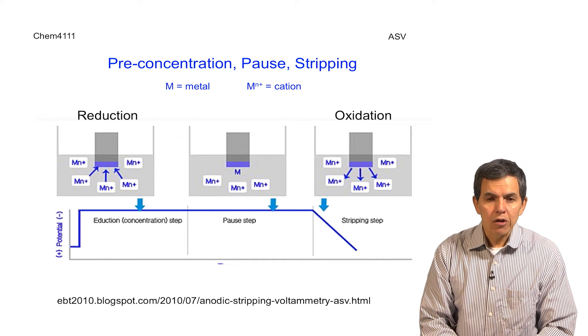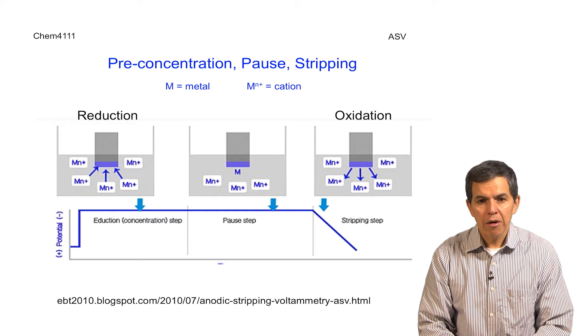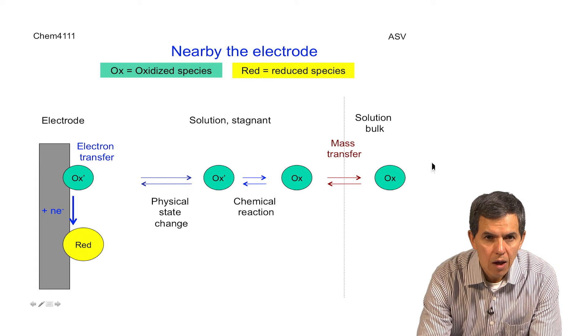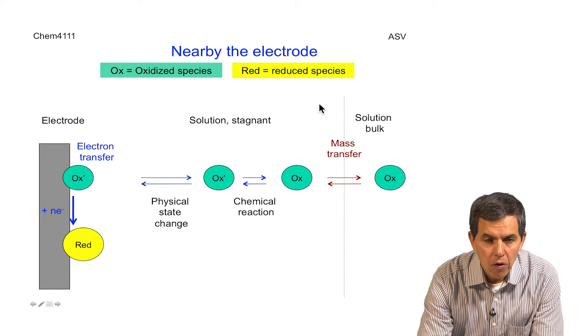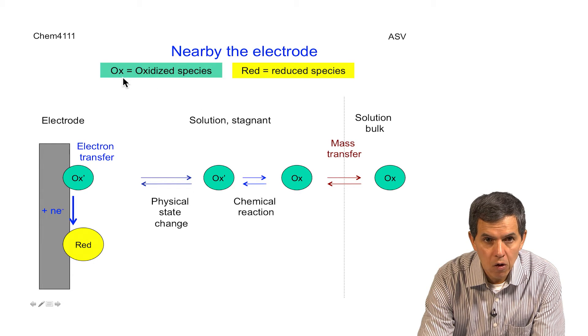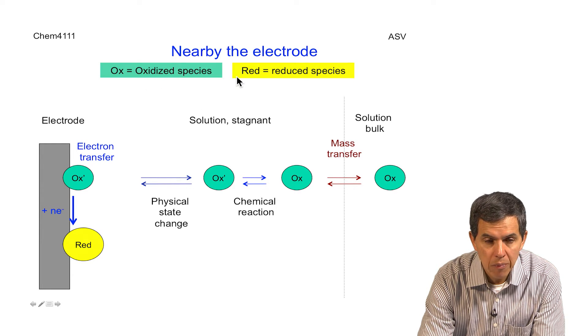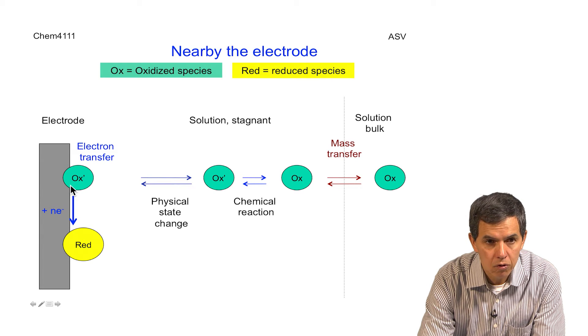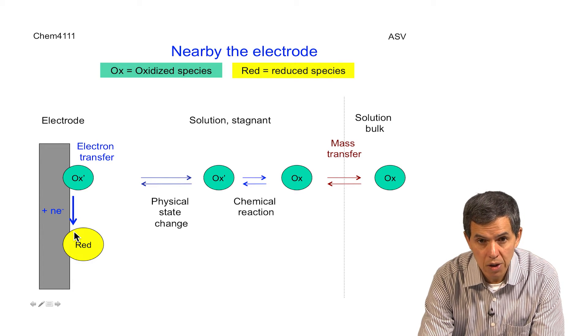It's important as well to understand what is happening very close to the surface of the electrode. This diagram shows the main components at the surface of the electrode. We have oxidized species represented by OX and reduced species represented by RED. Here we have the electrode, and as we can see here, right at the electrode surface, the process of electron transfer will happen, resulting in the addition of an electron to the oxidized species to produce a reduced species.